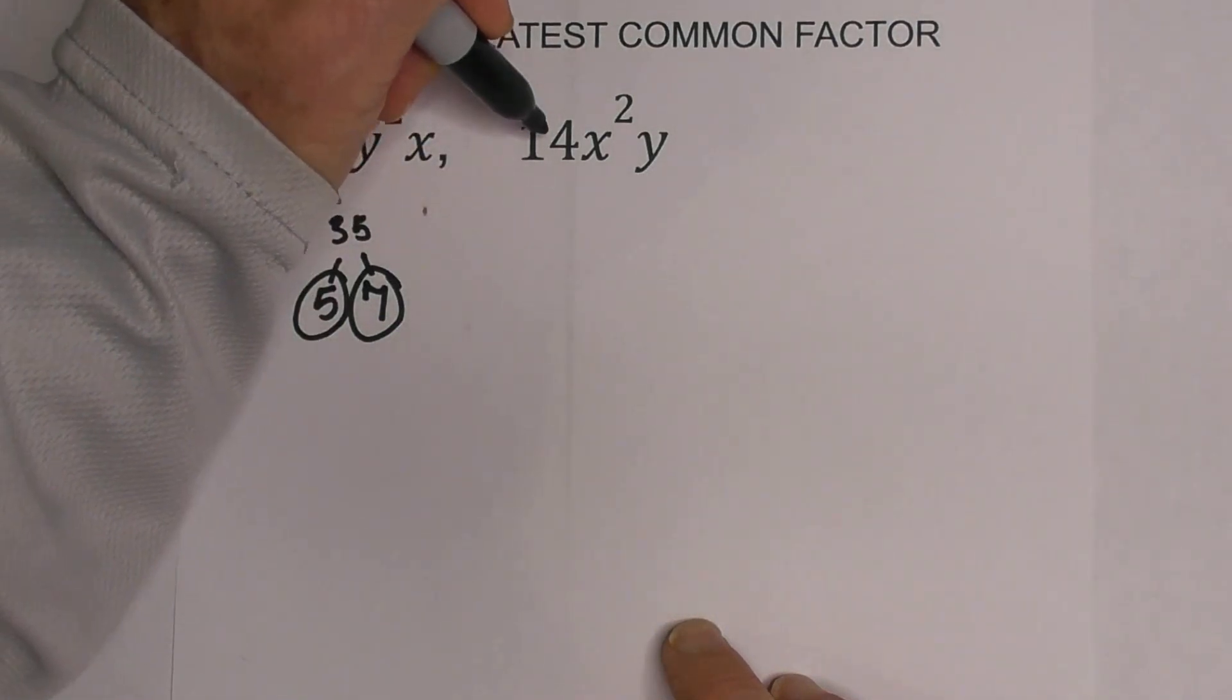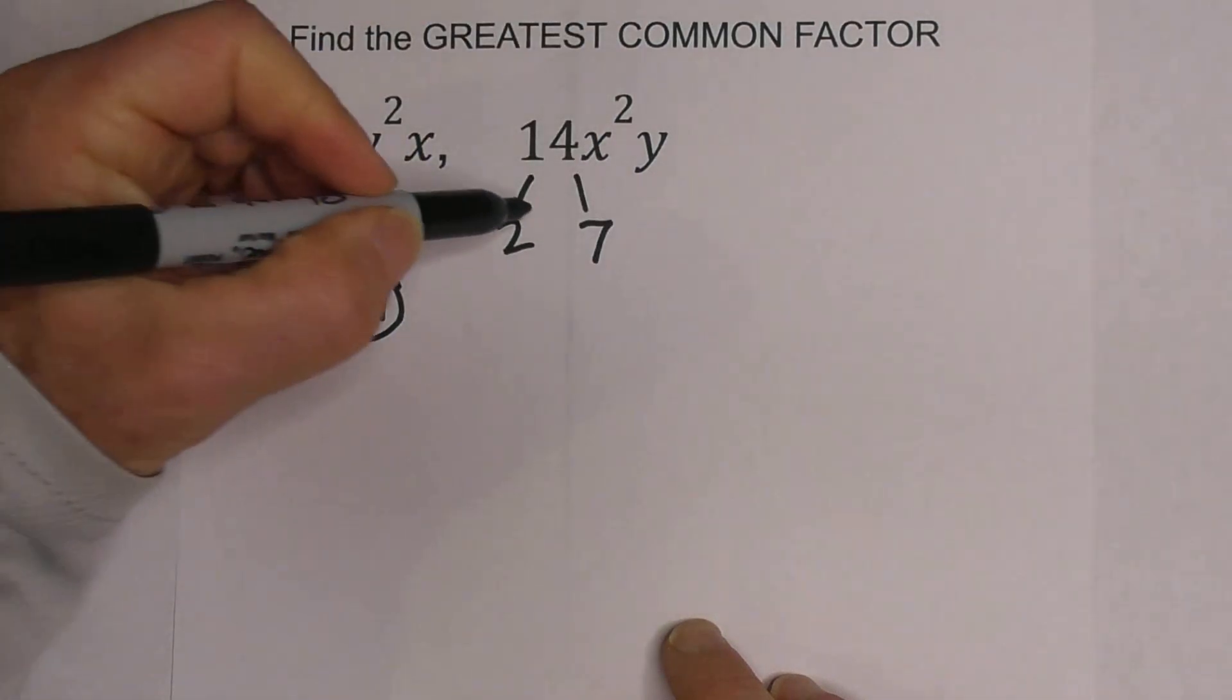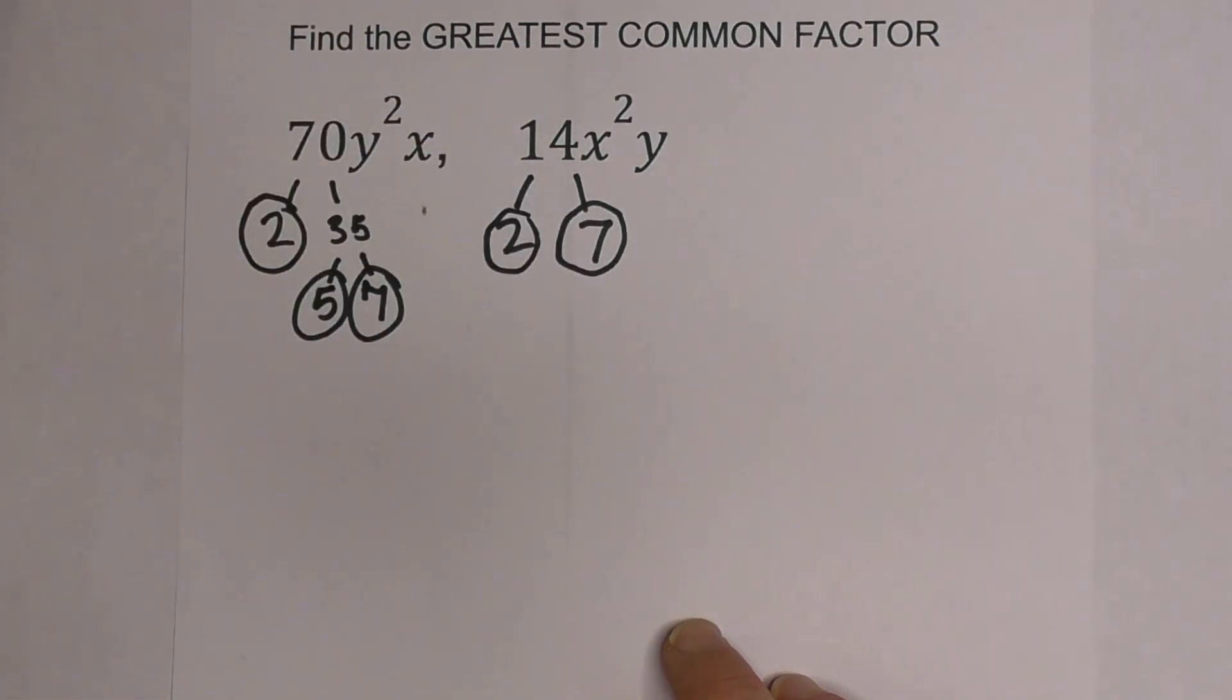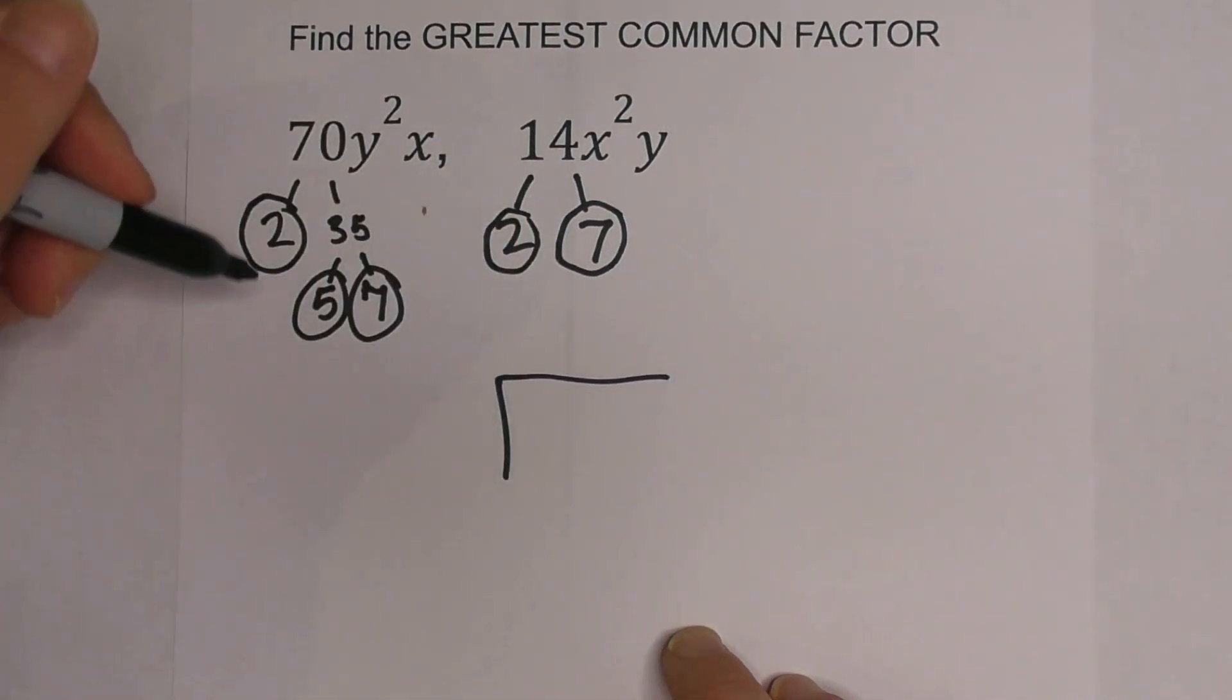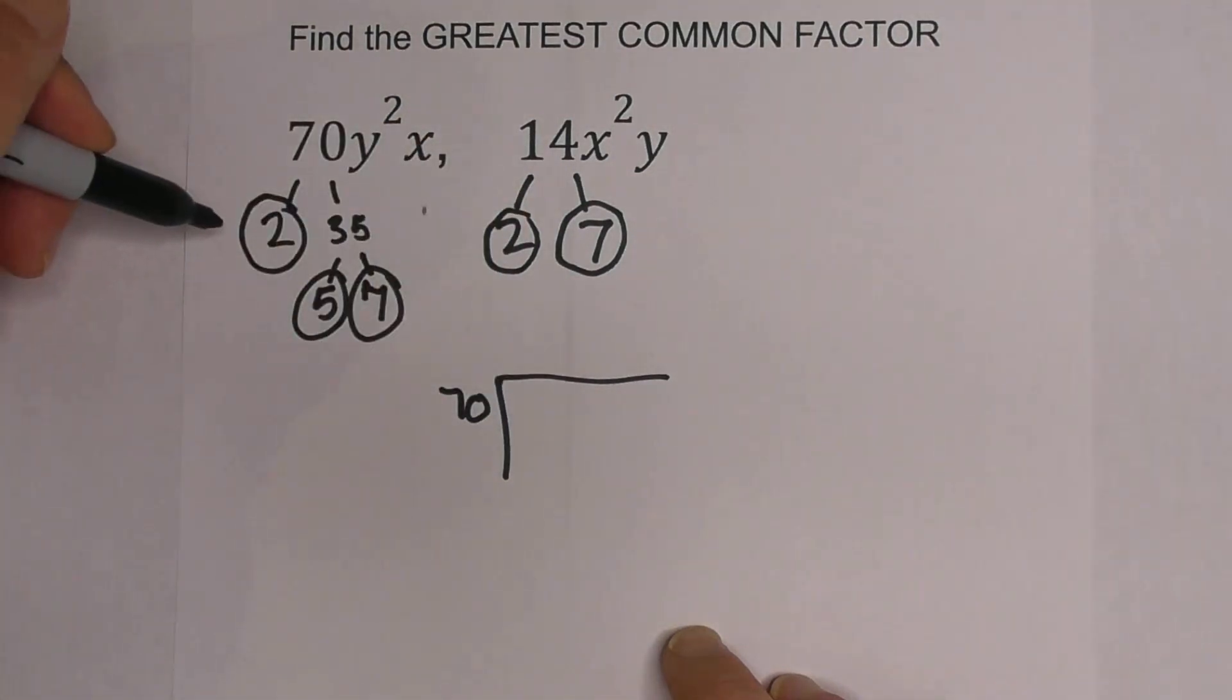So now let's do 14. What are 2 numbers that multiply together that equal 14? That's 2 and 7. And notice I'm down to prime numbers so I'm now finished. So now what I like to do to keep it organized is I make this little chart and I write all the prime numbers for each number in the chart.